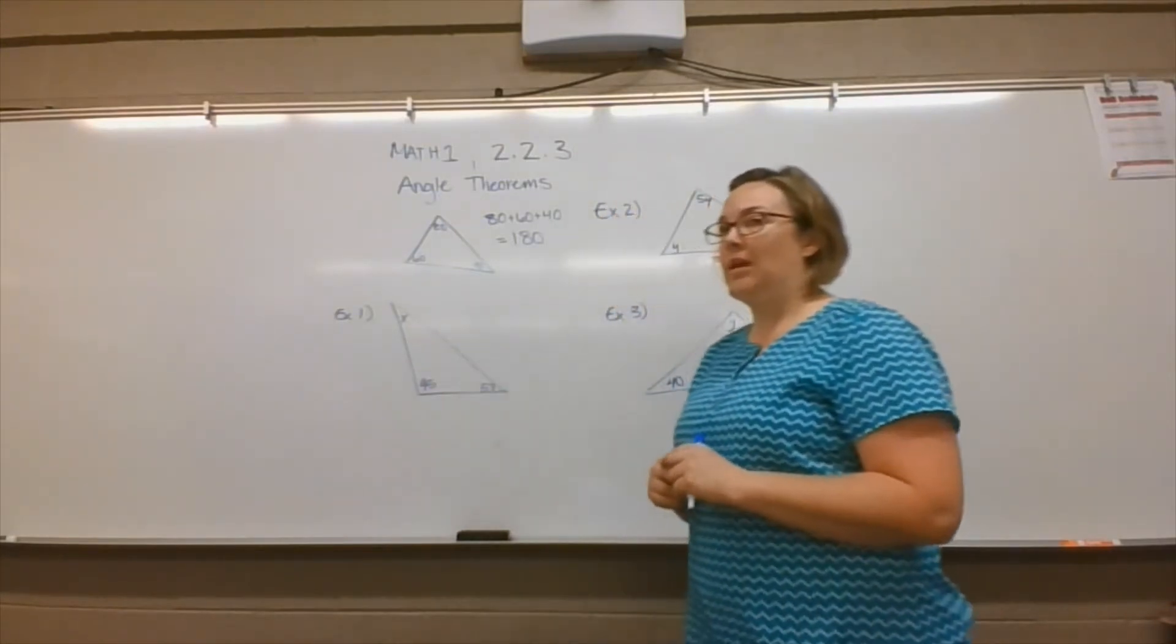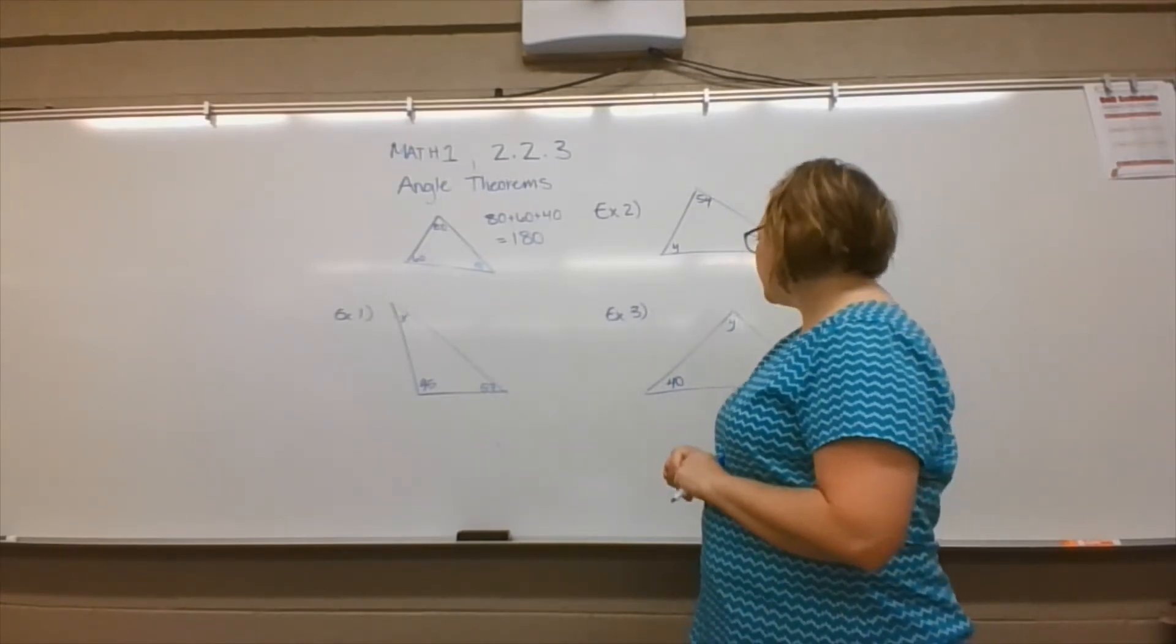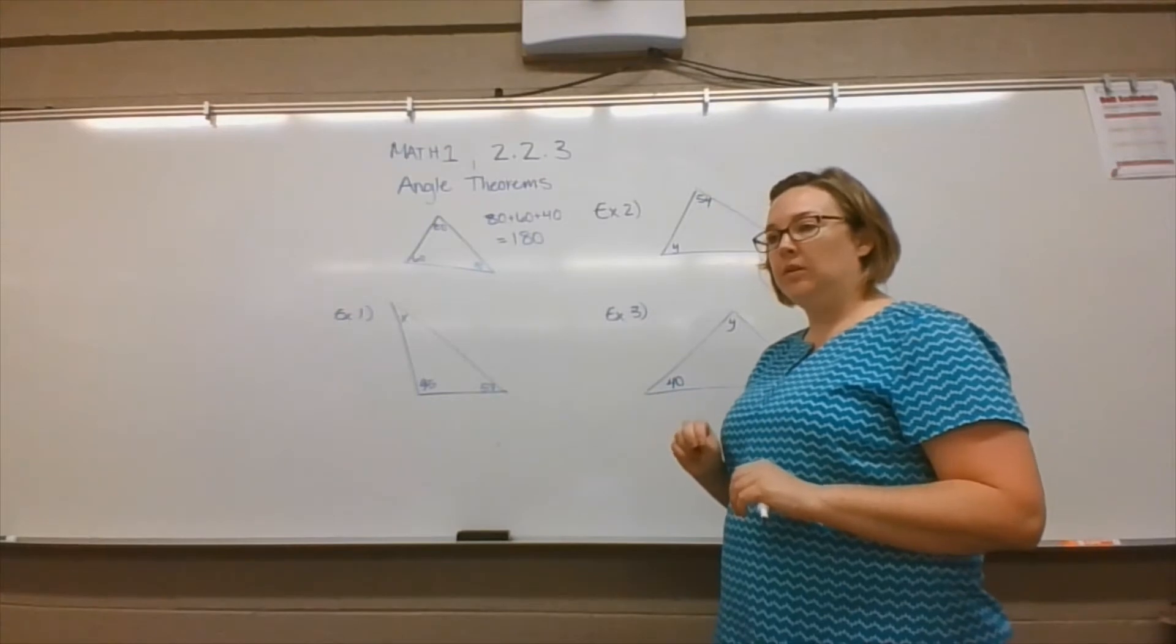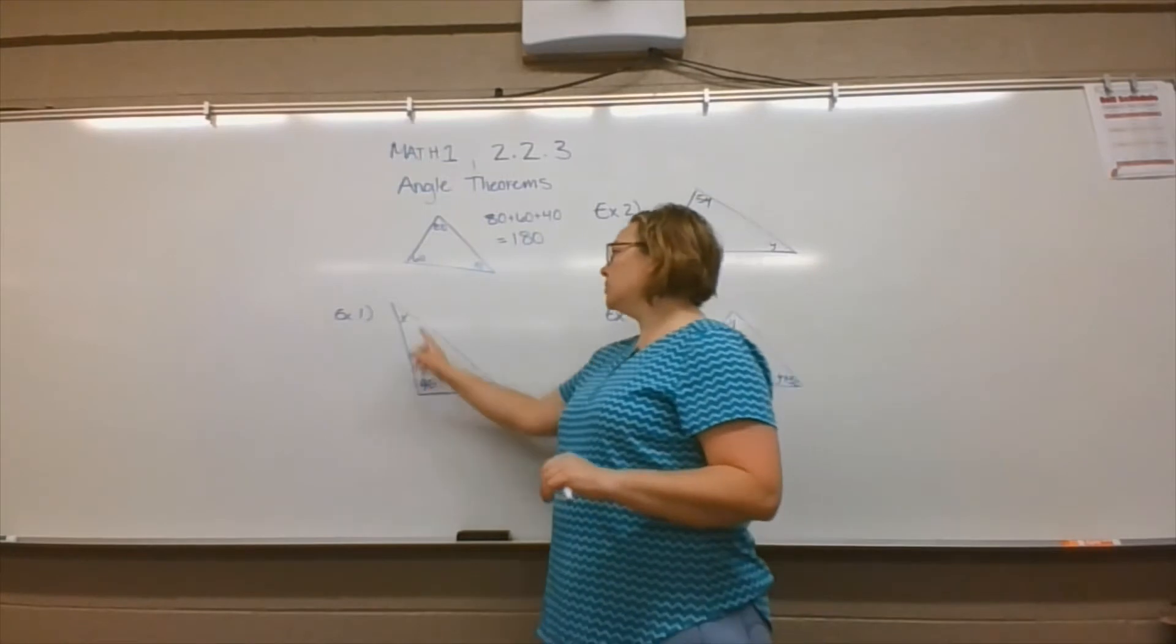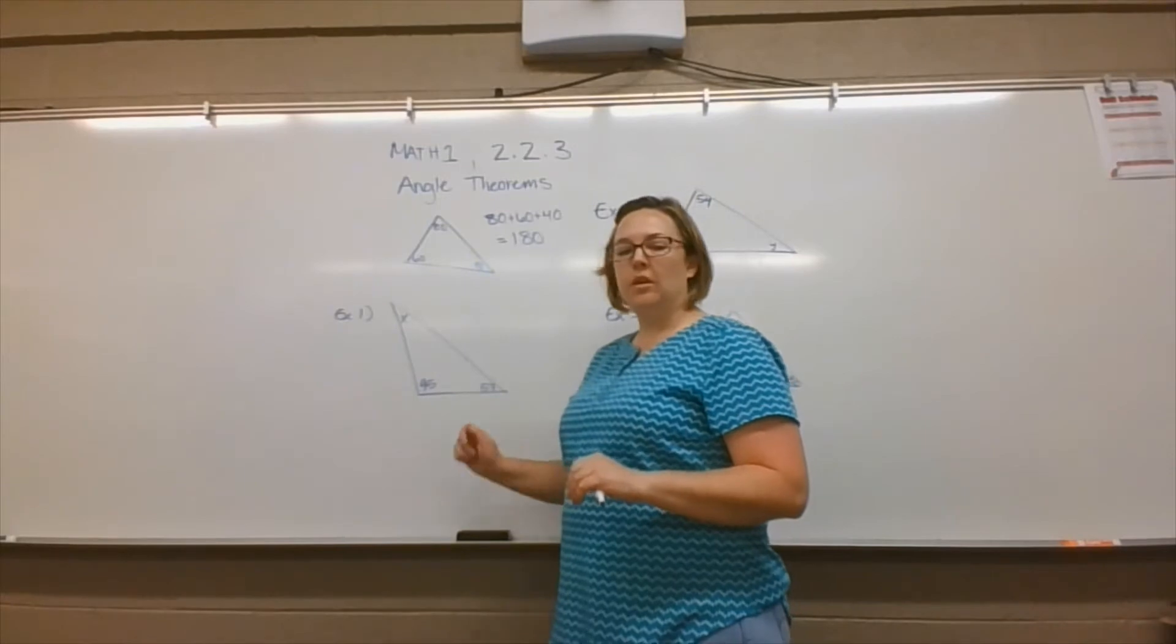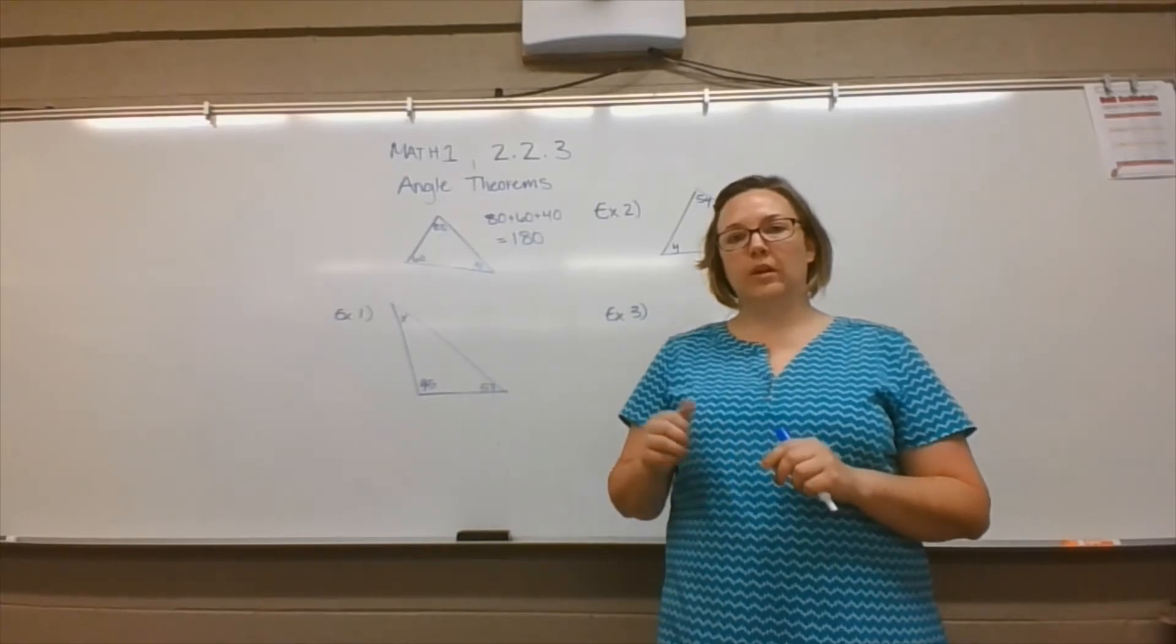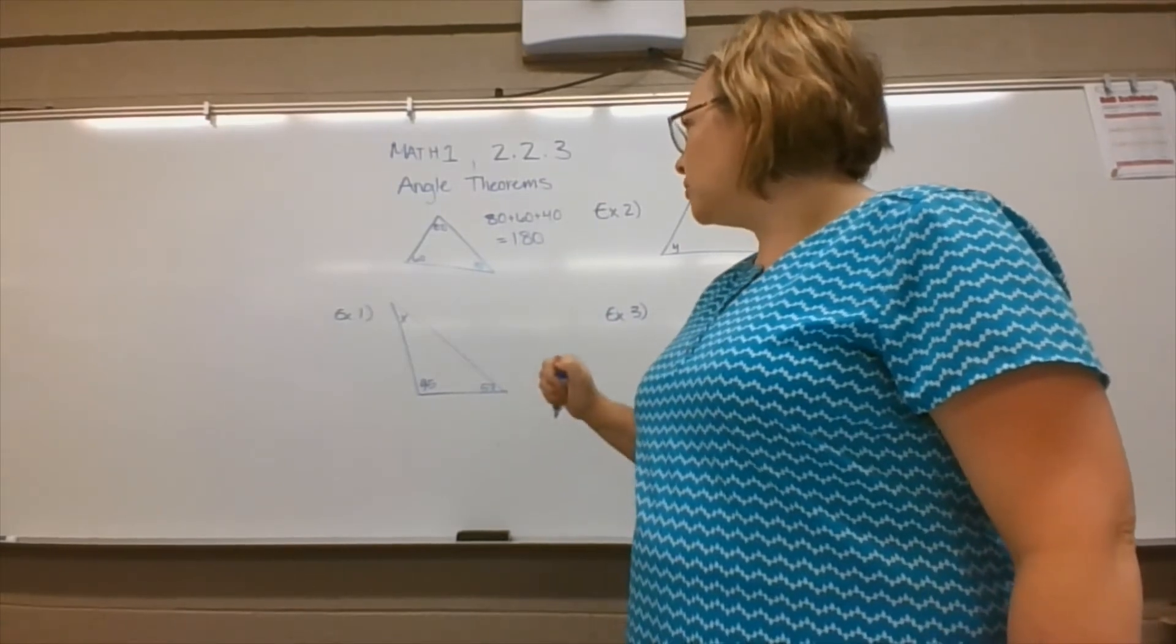If you have a right triangle, which I don't have one here as an example, but if you have a right triangle, then the two other angles also have to be acute. So you can have three acute angles, or you can have an obtuse and two acute, or a right angle and two acute angles. Those are your only options. Okay, all three acute, or two acute with either an obtuse or a right angle.